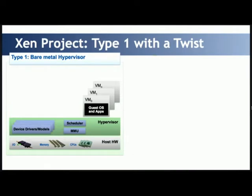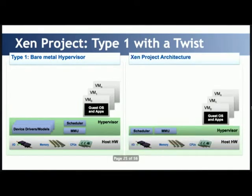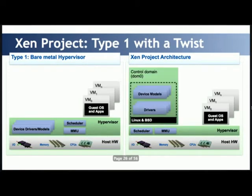Xen is neither Type 1 nor Type 2 — it's a Type 1 with a twist. We still have a hypervisor running on bare metal, but we only use it for the MMU and page table support, and the scheduler. Everything else is on the control domain, which is the first domain that starts with Xen. We use Linux or BSD for drivers, so we don't have to implement them in Xen. For emulating devices for guests, we use QEMU.